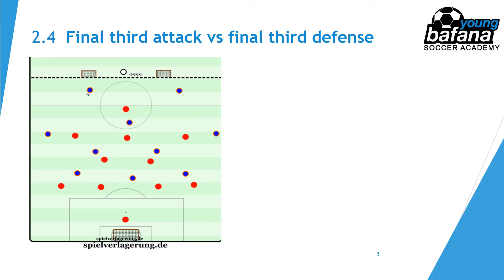Blue always starts with the ball from the back from the coach and looks to play an attack versus a very compact red defense. If red wins the ball they can counter-attack and look to score on the two mini goals placed in the half spaces. The mini goals are placed quite centrally so that blue's transition defense focuses on guarding the half spaces and guiding the opposition to the sides. We'll have 10 blue outfield players attacking 11 red defensive players.